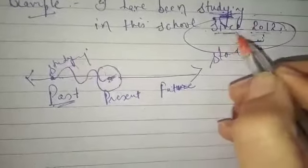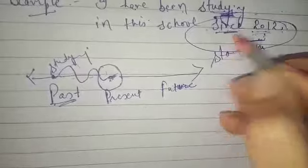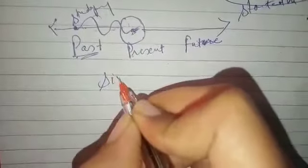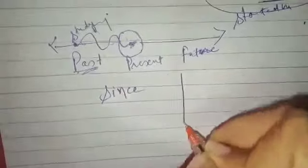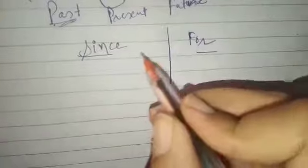But we will not use since always. For any time or for any duration we use since or for. These two prepositions are used for telling time in perfect continuous tenses. Since and for.